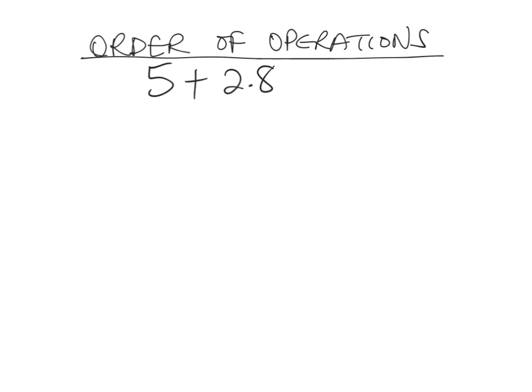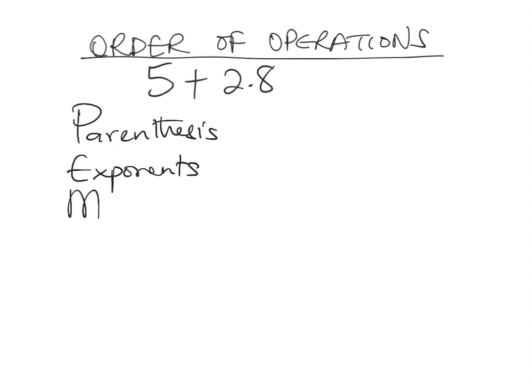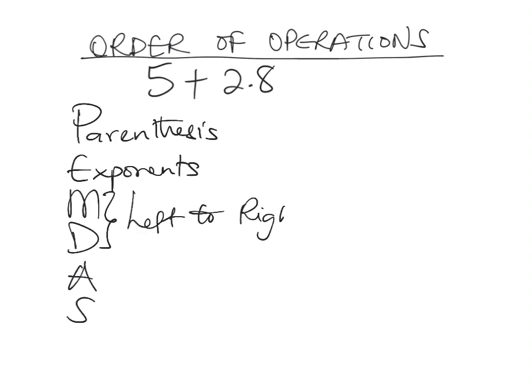In this video we're going to talk about order of operations. You might have heard about PEMDAS: parentheses, exponents, multiplication, division, addition, and subtraction. Remember that multiplication and division are essentially of equal rank, but you have to go from left to right. The same applies to addition and subtraction — you go from left to right, treating items on the left before items on the right.